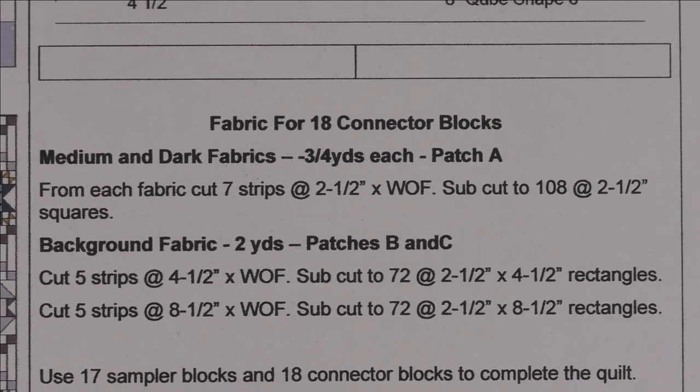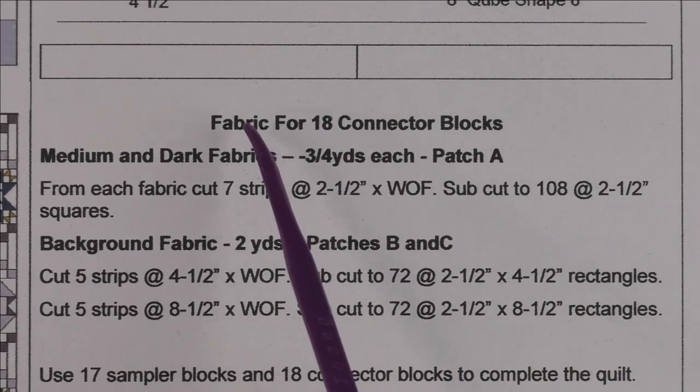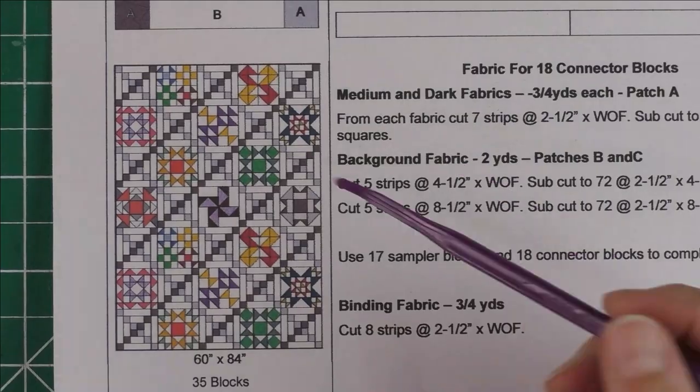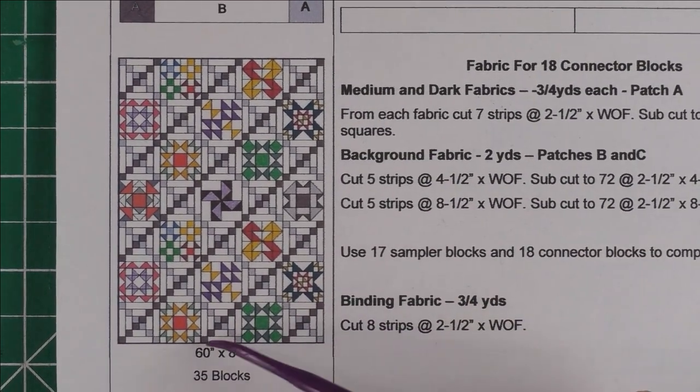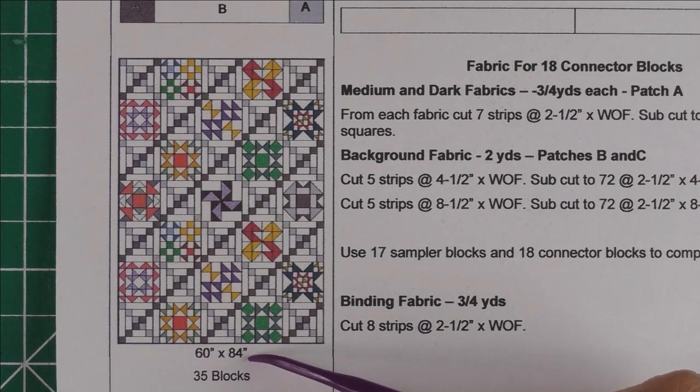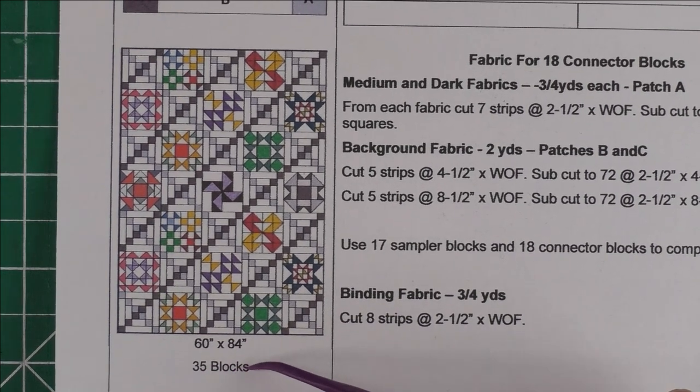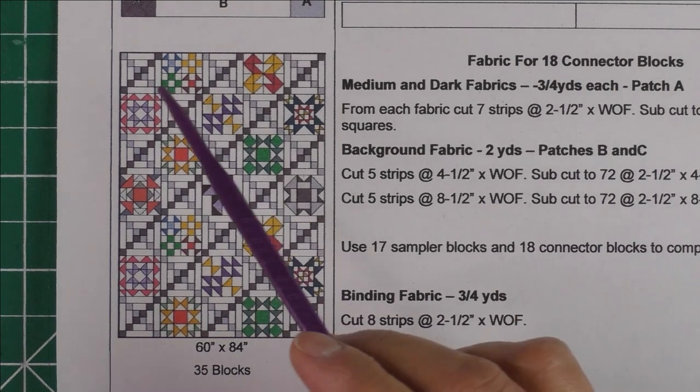I also included some instructions if you want to make 18 of these connector blocks. This quilt is set five across by seven down and makes a 60 by 84 inch quilt. There are 35 blocks, and 18 of them are these connector blocks. Then there are 17 of the sampler quilt blocks.